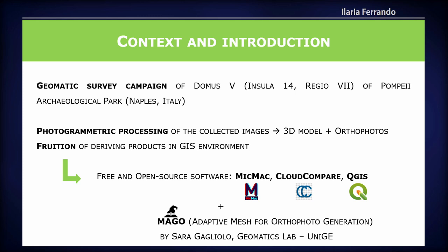All of these operations were conducted using free and open source software. In particular, we used MicMac, Cloud Compare, and QGIS, plus a non-open source software called MAGO, which was developed by Sara Gagliolo, a colleague of the Geomatics Lab at the University of Genova, which is able to produce high resolution orthophotos.